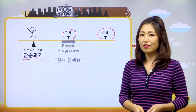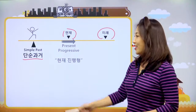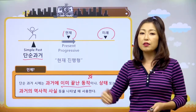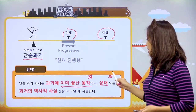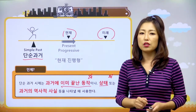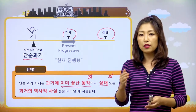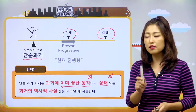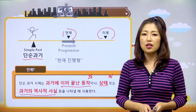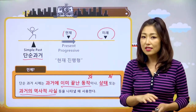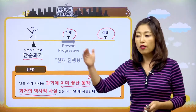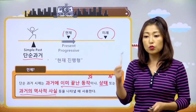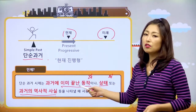오늘 할 거 조금 많아요. 그러니까 허리 펴고, 어깨 펴고 준비됐어요. 단순 과거는 언제 사용을 하냐. 단순 과거 시제는 과거에 이미 끝난 동작이나 상태에 대해서 말할 때 써요. 그리고 역사적 사실 등을 나타낼 때도 사용해요. 역사는 과거에 일어난 일을 이야기하는 거기 때문에 단순 과거 시제를 써야죠. 그래서 단순 과거 시제는 이럴 때 사용을 한다.